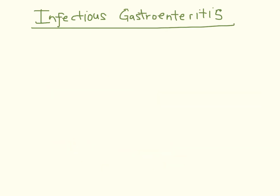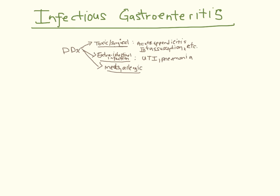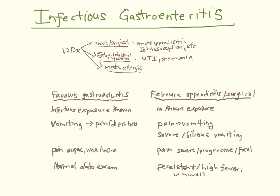Infectious gastroenteritis is extremely common and often benign. However, in pediatrics, acute gastroenteritis is the most common diagnosis made in cases of missed appendicitis and other surgical conditions. In the case of appendicitis, this is in part because young children are more likely to have diarrhea at presentation than at older ages. Features favoring gastroenteritis include recent infectious exposures, a temporal pattern with vomiting preceding abdominal pain and diarrhea, vague abdominal pain that waxes and wanes, and a fairly normal exam aside from dehydration. In contrast to appendicitis, pain usually precedes vomiting and is more likely constant, progressive, and/or focal.